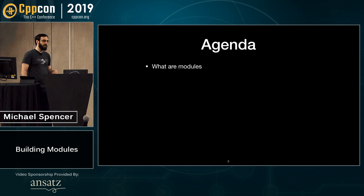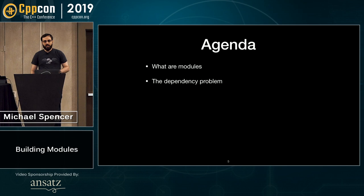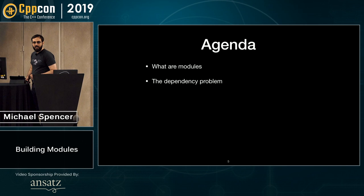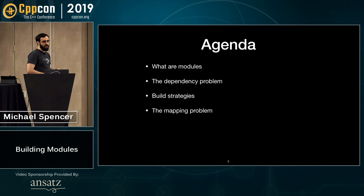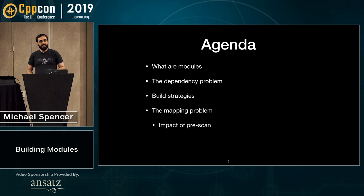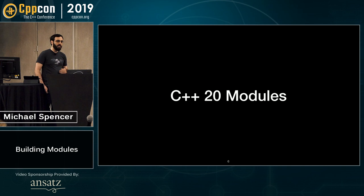Here's what I'm going to cover. First, modules are new, so we'll go into what they actually are and what they're not, from the perspective of how they're built. Then we'll cover the dependency problem — headers form dependencies, modules form dependencies, but modules form a different kind. We'll look at different build strategies, the mapping problem of going from a module name to a module interface, how pre-scan impacts this, and finally some existing build systems that have implemented or are working on module support.